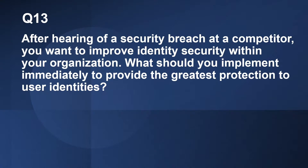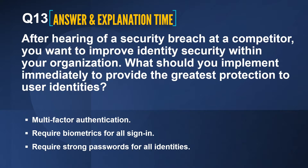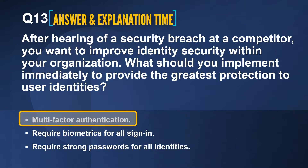Question number 13. After hearing of a security breach at a competitor, you want to improve identity security within your organization. What should you implement immediately to provide the greatest protection to user identities? The options are multi-factor authentication, require biometrics for all sign-in, and require strong passwords for all identities. The correct answer is multi-factor authentication, or MFA. Multi-factor authentication dramatically improves the security of an identity.